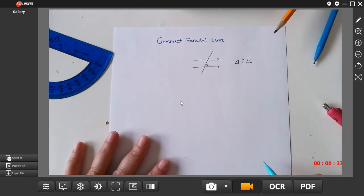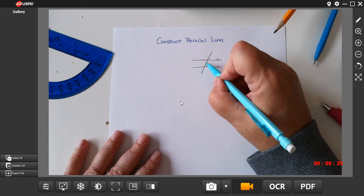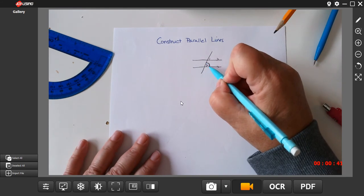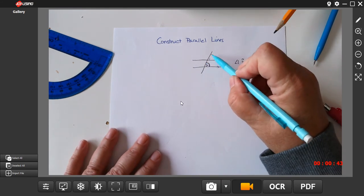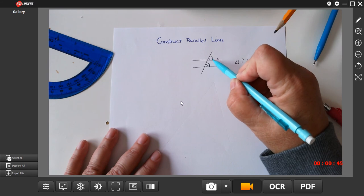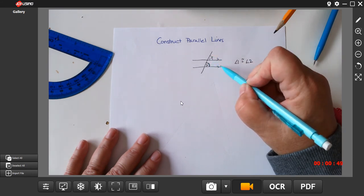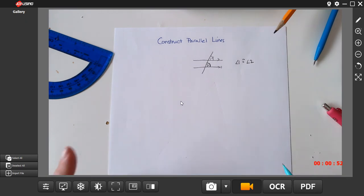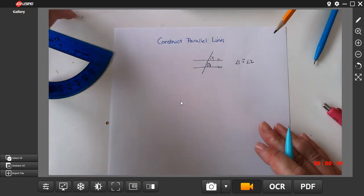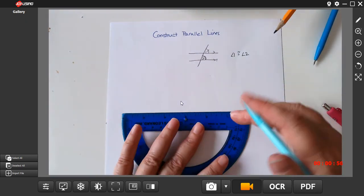So what we're going to do is we're going to start with one of those angles, for instance angle 2. We're going to copy angle 2 up here to create angle 1, and if these two angles are congruent, that means my lines then have to be parallel. So before we do that, let's review how to copy an angle, because this is the biggest problem.